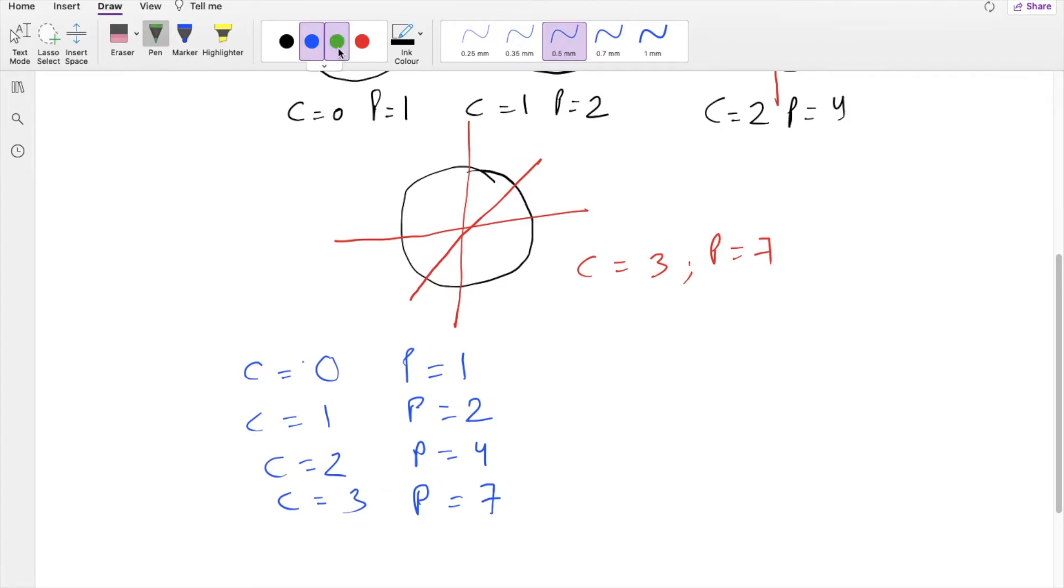So you can see a pattern in this: you have to add the cut number to the previously made pieces to get the number of pieces of the current cut. So now we can derive the recurrence relation from these above equations.